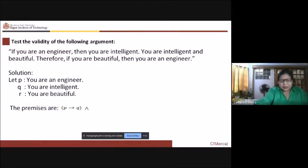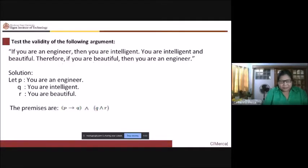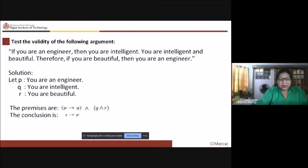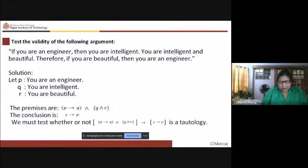The premises are: if you are an engineer, then you are intelligent — that is P implies Q. And: you are intelligent and beautiful, so Q and R. The conclusion is: therefore, if you are beautiful, then you are an engineer — that is R implies P. So, to show that this argument is valid, we should test whether the result is a tautology. Otherwise, if there is even one false, then it's not valid.